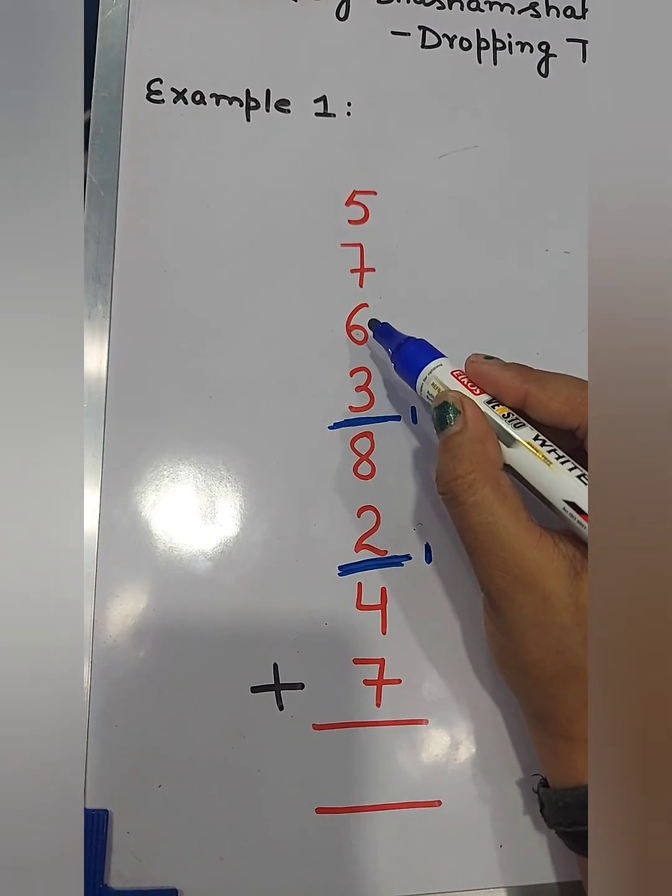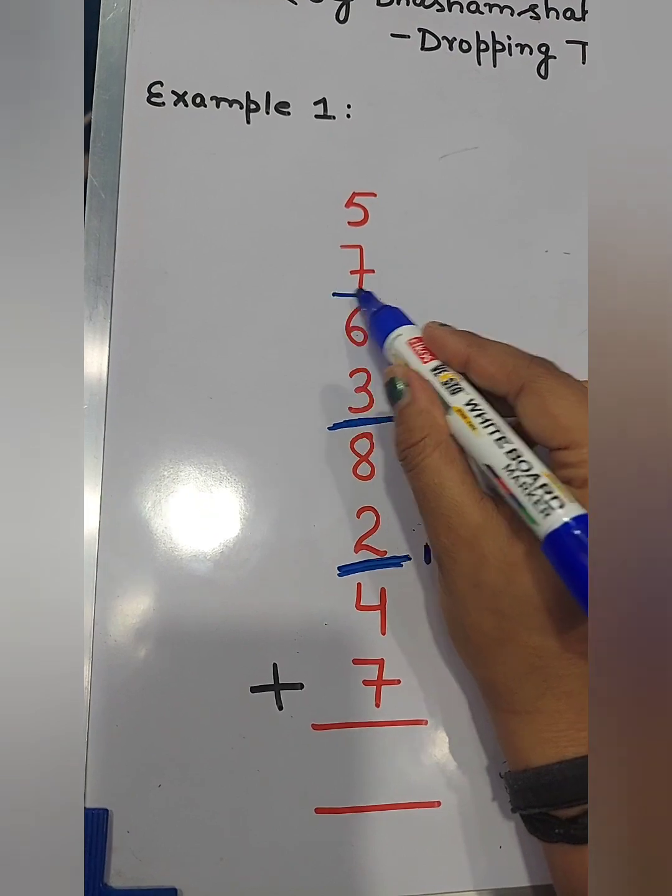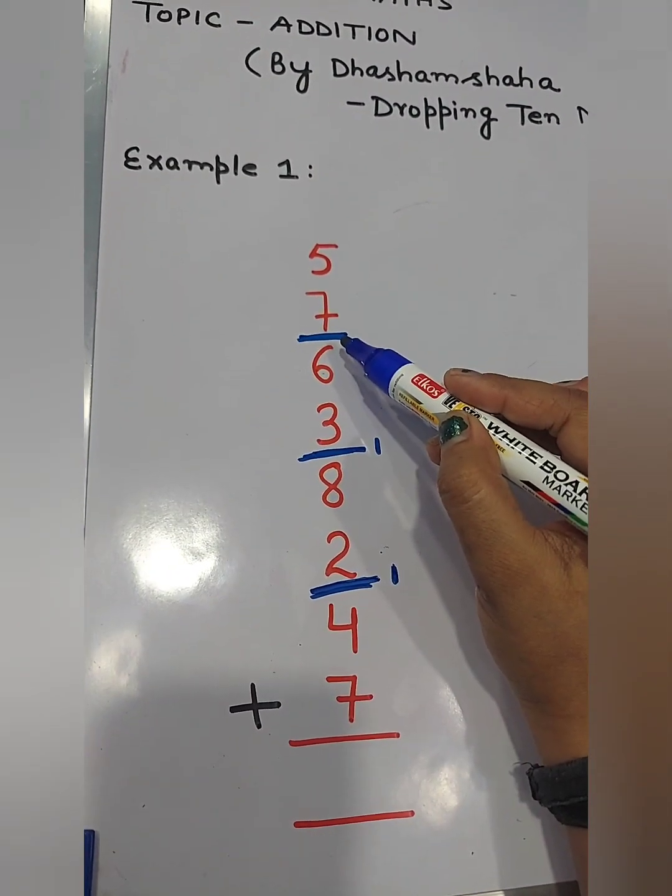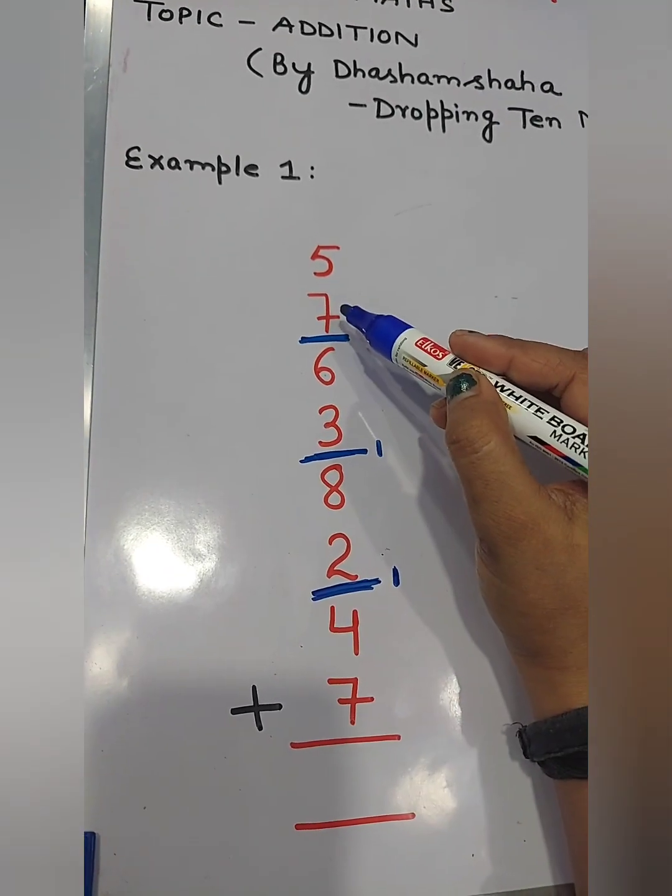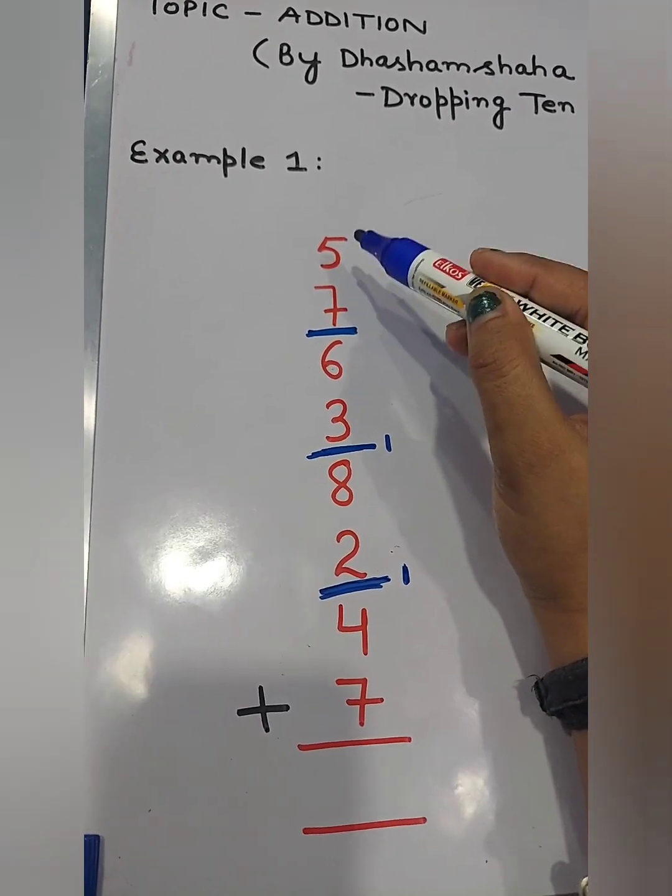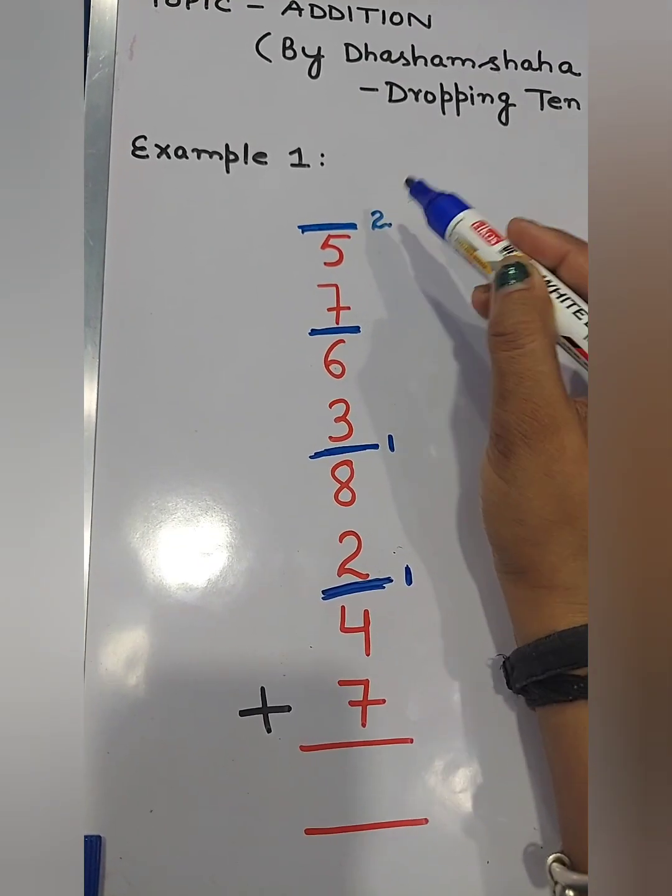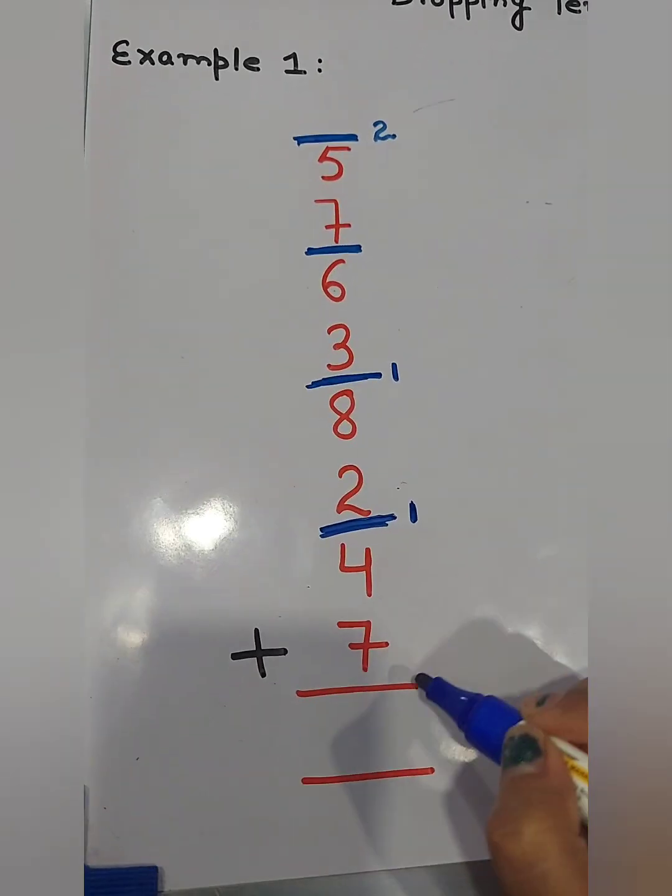And 4 plus 6, 10. So 10 को हमने क्या करना है? Drop करना है. Dropping 10 method है. So 10 को यहाँ छोड़ दिया. And no carry. So next number add. 7 plus 5, 12. 12 में से अगें 10 को drop कर दो. We have left only 2. So write 2 here.